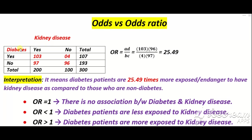इन दोनों के in between हम association देखना चाहते हैं। Diabetes को भी dichotomize किया — जिनको diabetes है और जिनको नहीं है। इसी तरह kidney disease के लिए दो groups बनाए — case group और control group। Odds ratio का formula 2x2 contingency table में define किया जाता है — AD divided by BC।